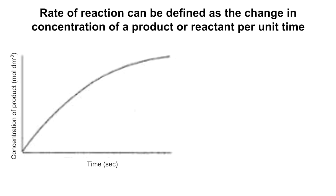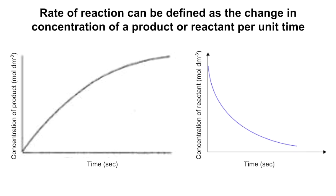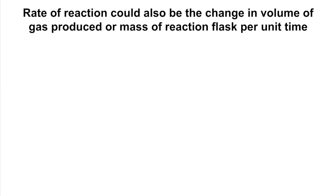If you're looking at how the concentration of a product in moles per decimetre cubed changes over time, the graph would start at zero and reach a maximum. And if you're talking about the concentration of the reactant over time, it does the opposite. You can also define rate of reaction as the change in volume of gas produced, or the mass of a reaction flask per unit time.